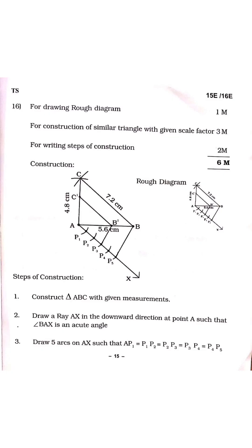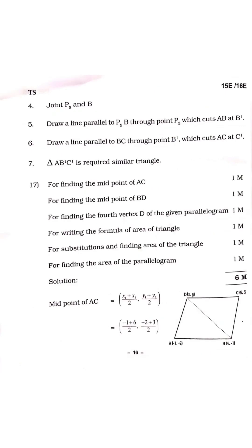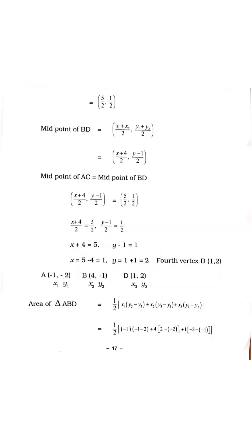For Question 16 on triangle construction: for drawing the rough diagram you get one mark, for constructing the triangle with the given scale three marks, and for writing the steps two marks — totaling six marks. The rough diagram is very important. For Question 17: for finding the midpoint of AC one mark, midpoint of BD one mark, finding the fourth vertex D of the parallelogram one mark, writing the formula for area of triangle one mark, substituting and finding the area one mark, and finding the area of the parallelogram one mark — totaling six marks.